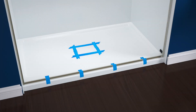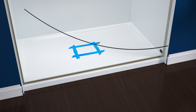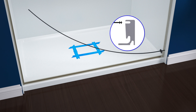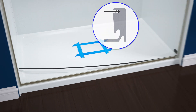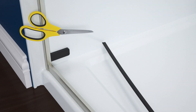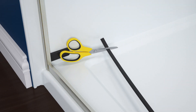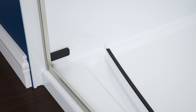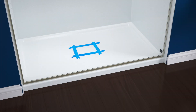Remove the tape holding the threshold in place. Starting at one end of the threshold, firmly press the threshold seal completely into the threshold groove. Use scissors to trim any excess seal. Tape the threshold in place.